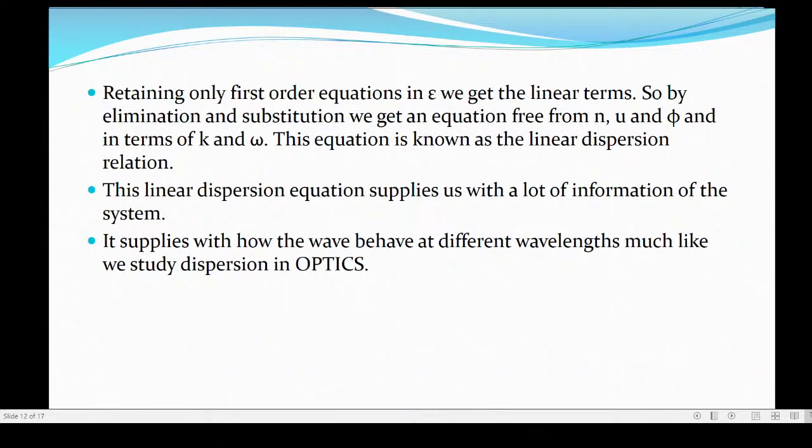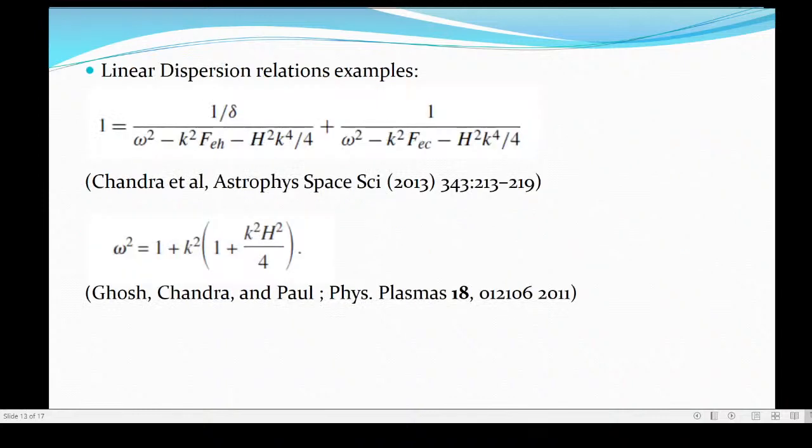Since these are variables they will come online and they will come as our dispersion relation omega as a function of k. The linear dispersion relation therefore supplies us with a lot of information of the system - it supplies how the wave behaves at different wavelengths. Suppose different wavelengths have got different behaviors much like we study in optics.